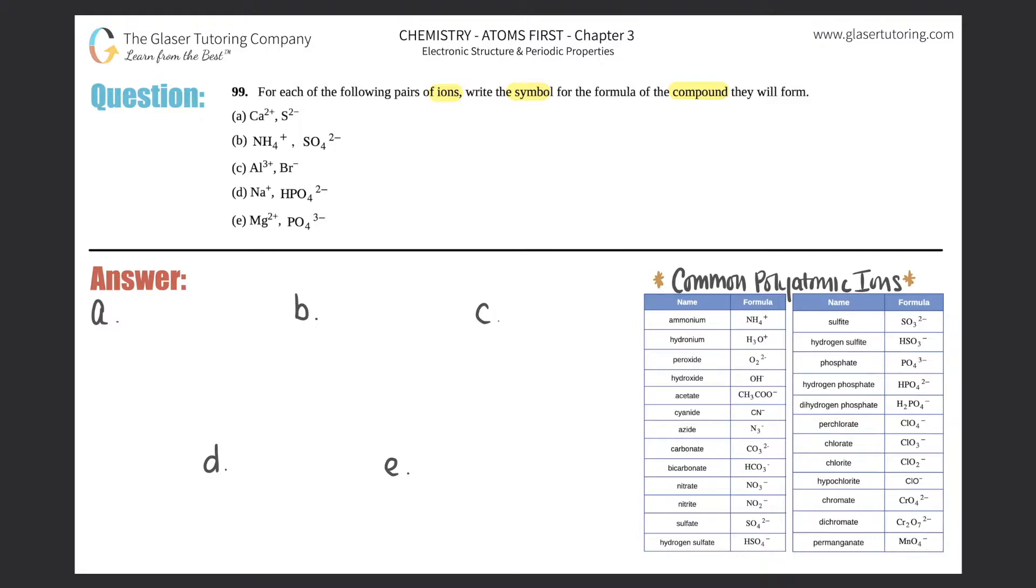All we're going to do is take the individual ions and put them into their compounds. We did a very similar exercise in the last one, but instead we were given the compound and we had to find the ions. So this is kind of backwards.